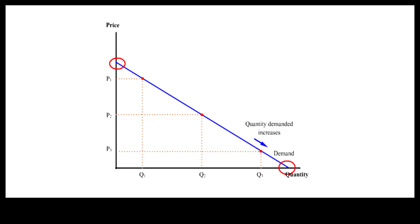When more is bought at lower prices, we say the quantity demanded has increased. When less is bought at higher prices, we say that the quantity demanded has decreased.